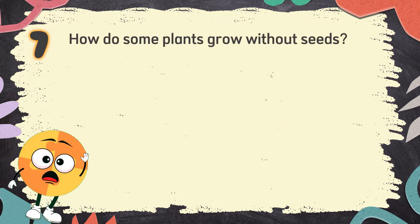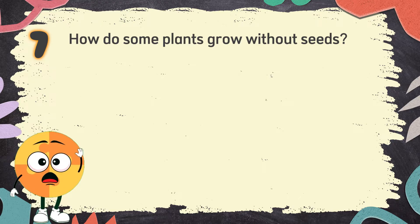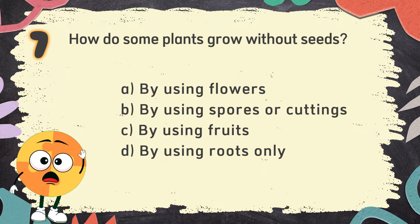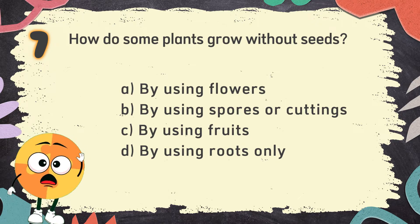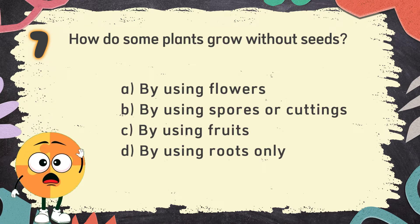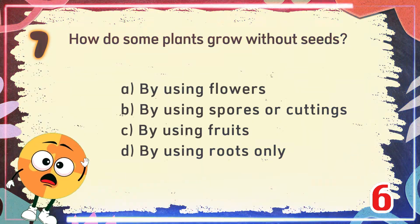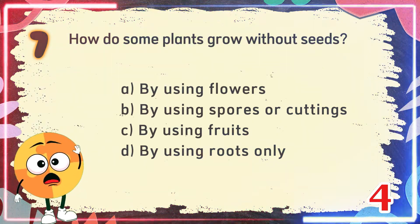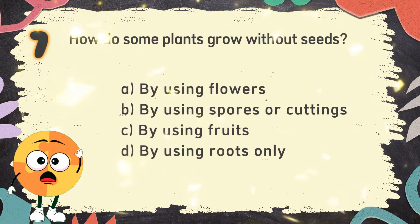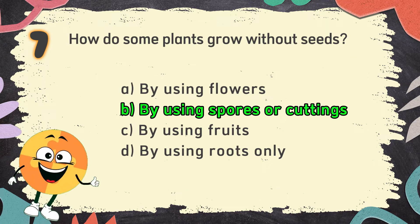Number 7: How do some plants grow without seeds? The choices are: A. By using flowers, B. By using spores or cuttings, C. By using fruits, D. By using roots only. The correct answer is B. By using spores or cuttings.